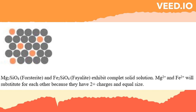If the sizes are similar but still very different, the substitution may only occur over a limited range of compositions, and the solid solution series is said to be partial or limited. The partial or limited solid solution can also occur because the substituting ion does not occur in high enough concentrations in the environment in which the mineral is formed.